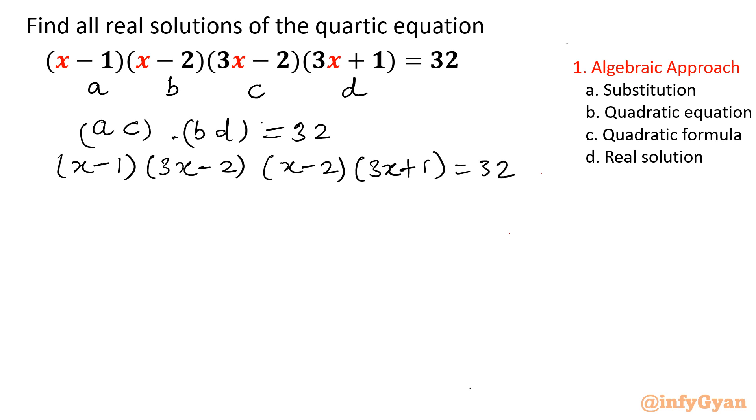Now multiply the first two brackets: 3x square, x times minus 2 is minus 2x, minus 1 times 3x is minus 3x, so minus 5x total. Minus 1 times minus 2 is plus 2. That gives us 3x² - 5x + 2.